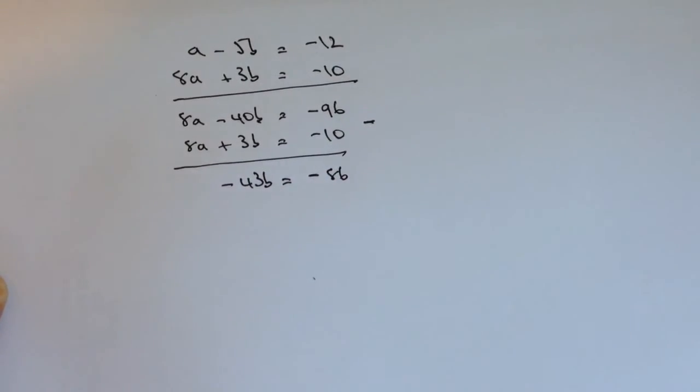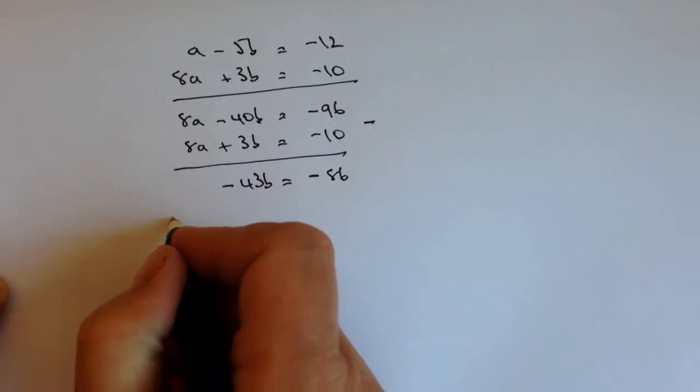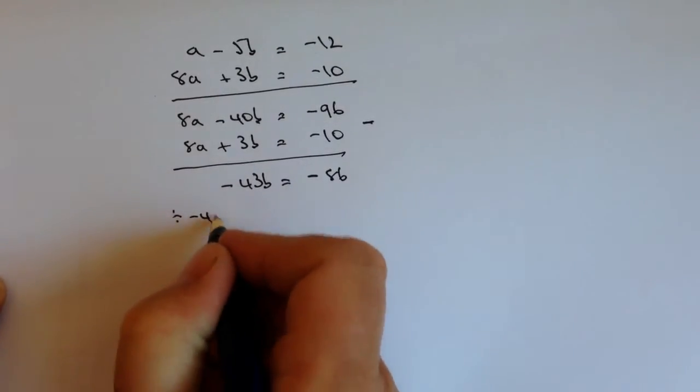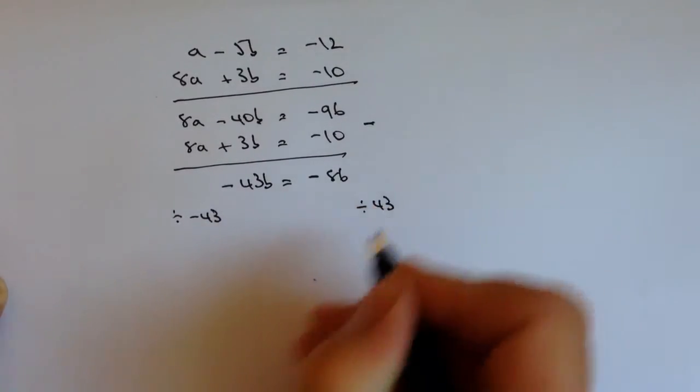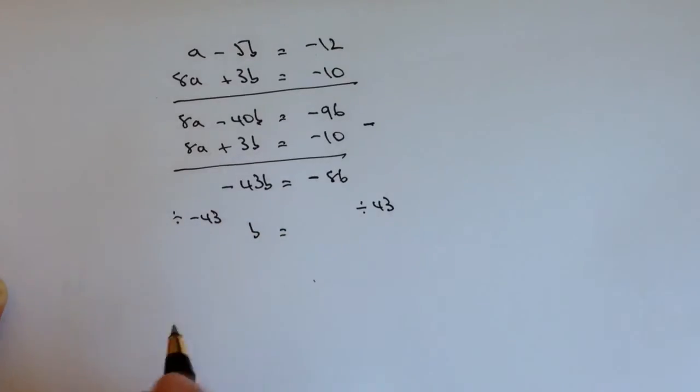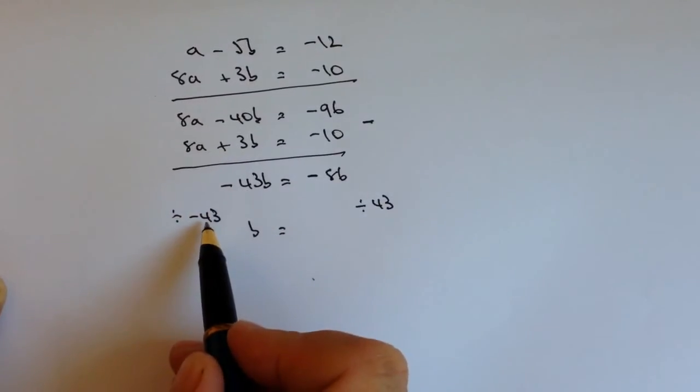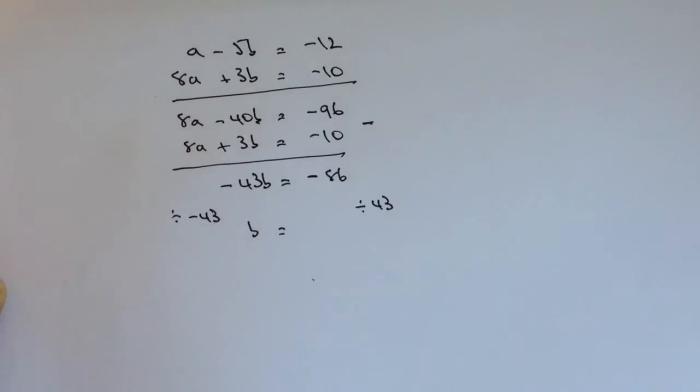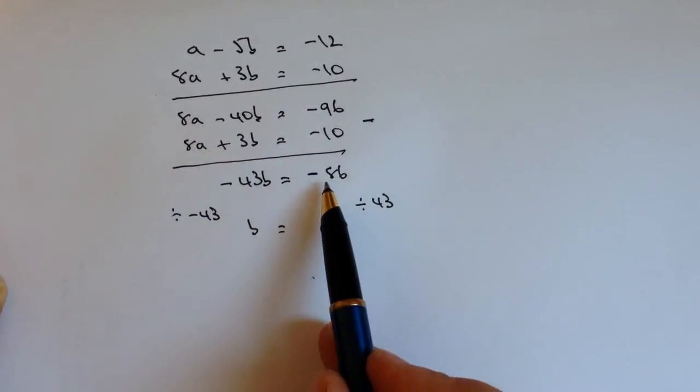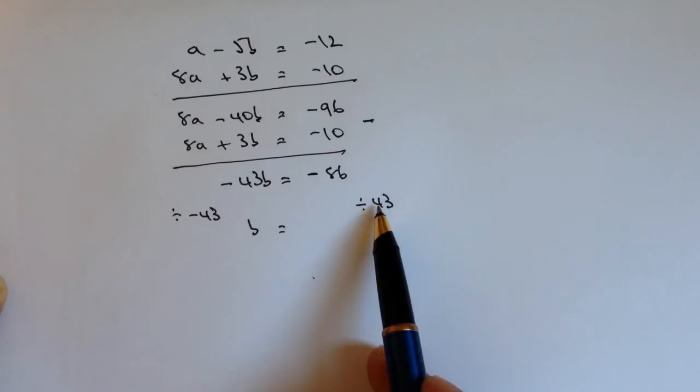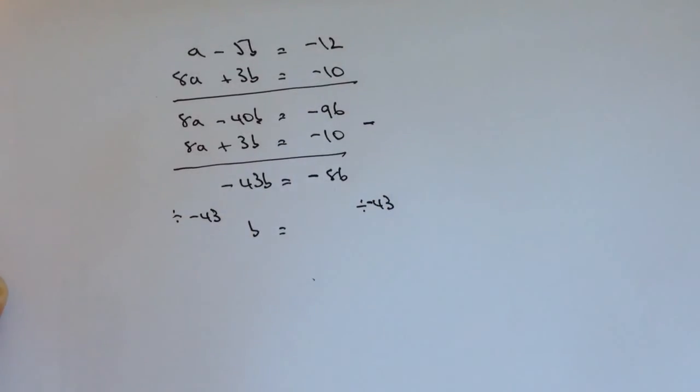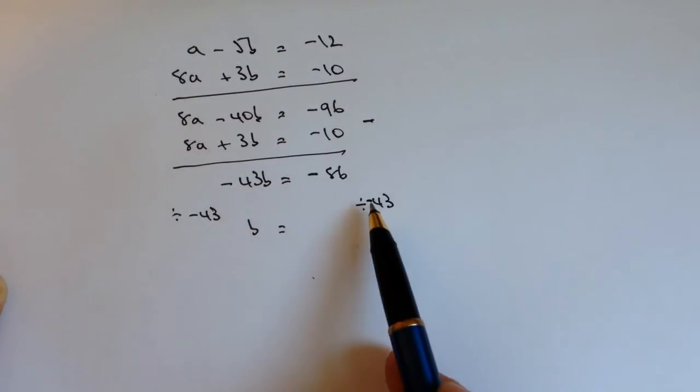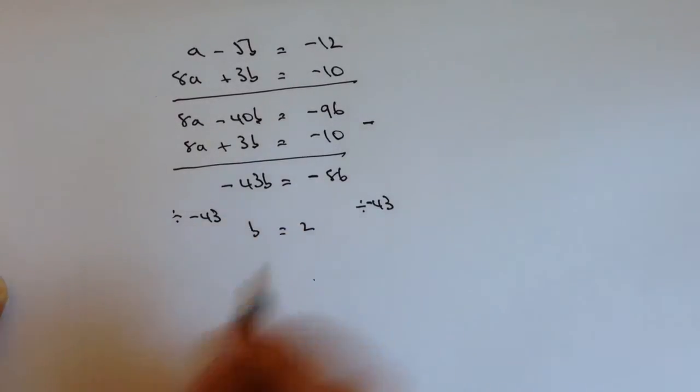And that kind of gives me a fair bit of confidence because I know now that if I divide through by -43 on both sides, I end up with b, because -43 divided by -43 is b. It's a positive value of b. And that's going to equal -86 divided by -43, which is going to be a positive 2, because a negative divided by a negative is going to be a positive.